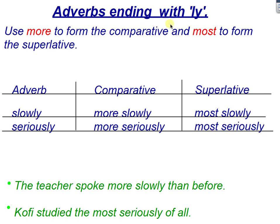Adverbs ending with -ly. For adverbs that end with -ly, we simply add 'more' to form the comparative and 'most' to form the superlative. For example, 'slowly' — in comparison between two actions or between how two people perform an action, we say 'more slowly.' And when it involves three or more, we say 'most slowly.'